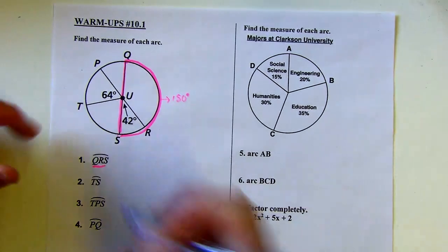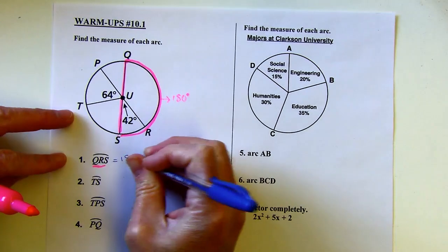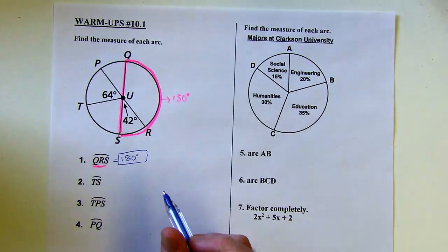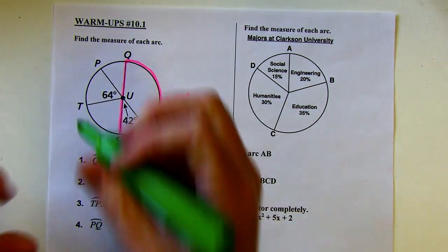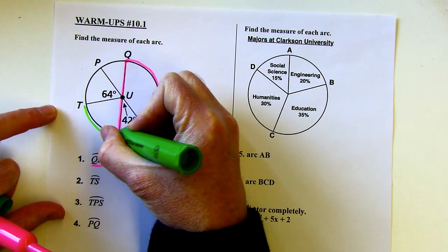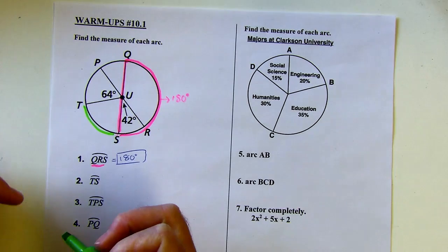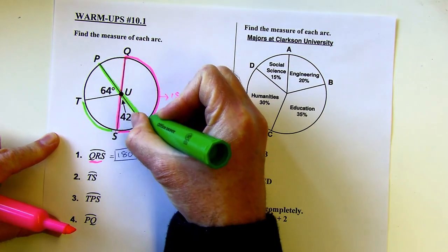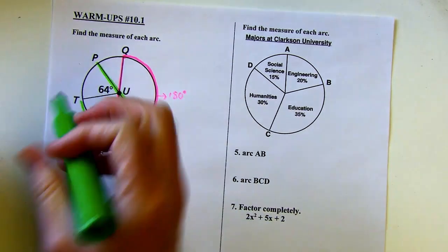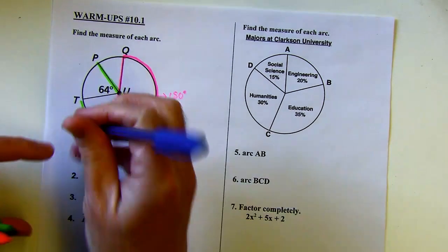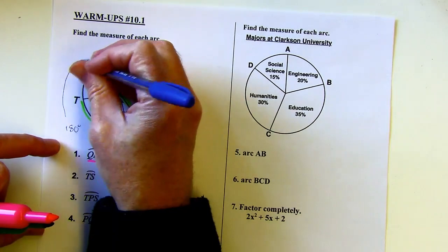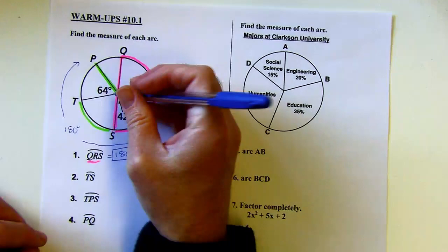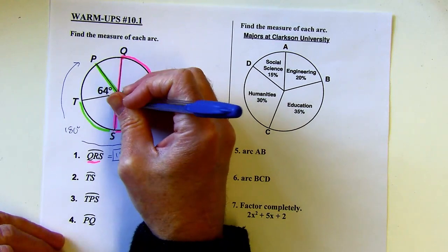Which means I'm dealing with 180 degrees. This part then is 180 degrees, the whole piece there. It's the same as the measure of the central angle, that central angle would be 180 degrees. Now TS, so TS is over here. Let's see what we can do with that. I've got another diameter here that's going to help me because I know all of this together is 180.